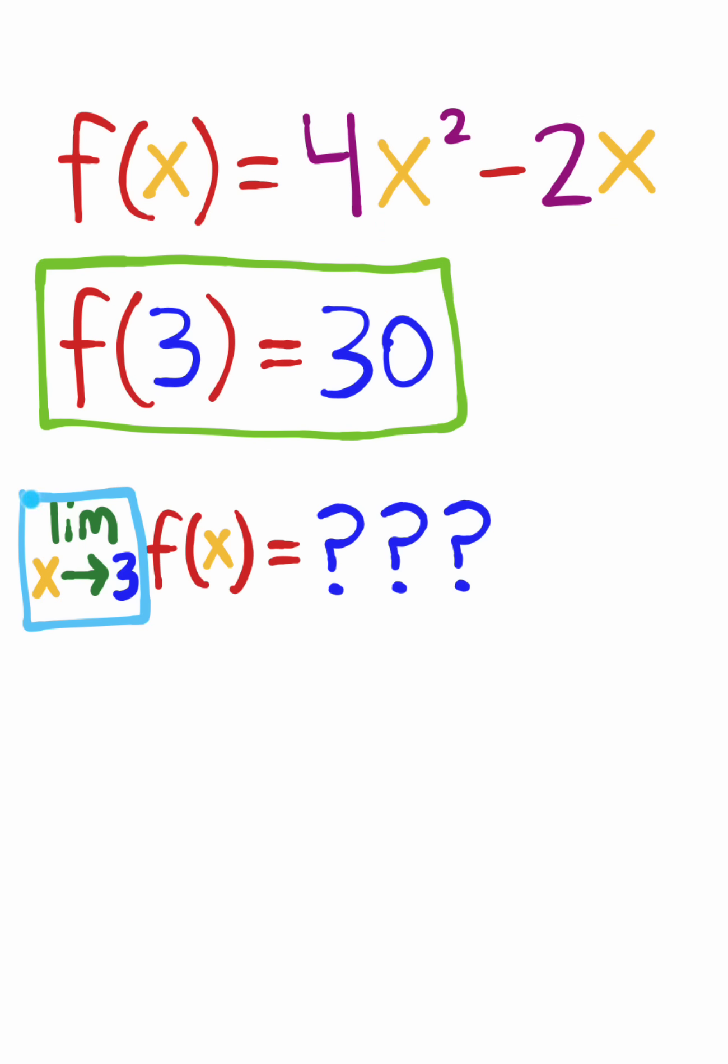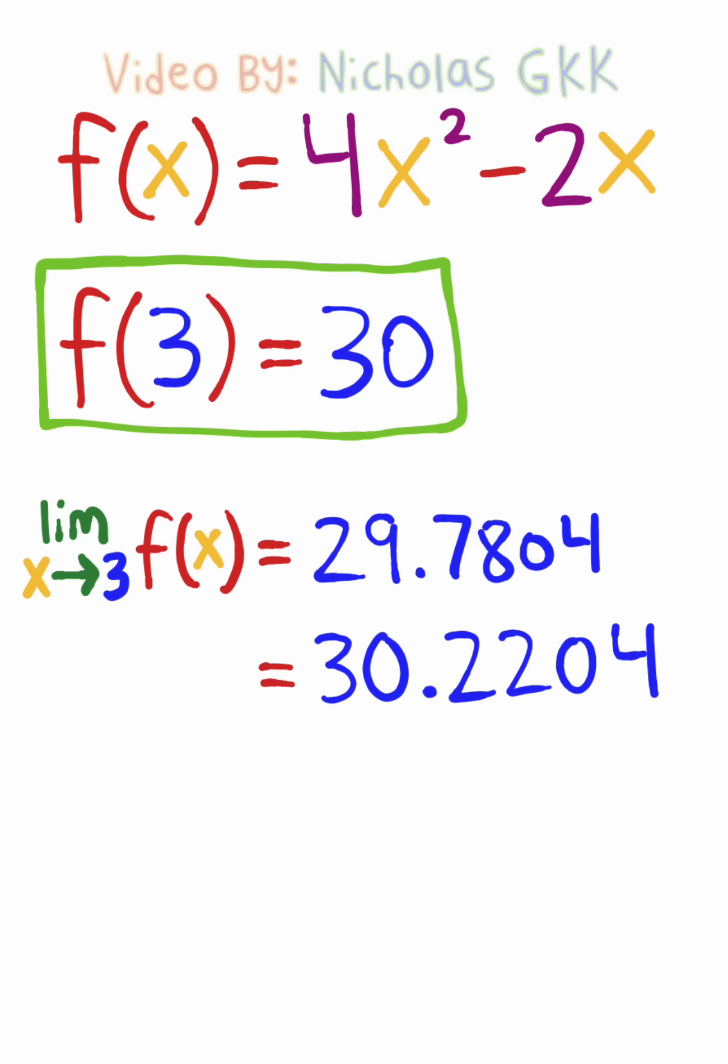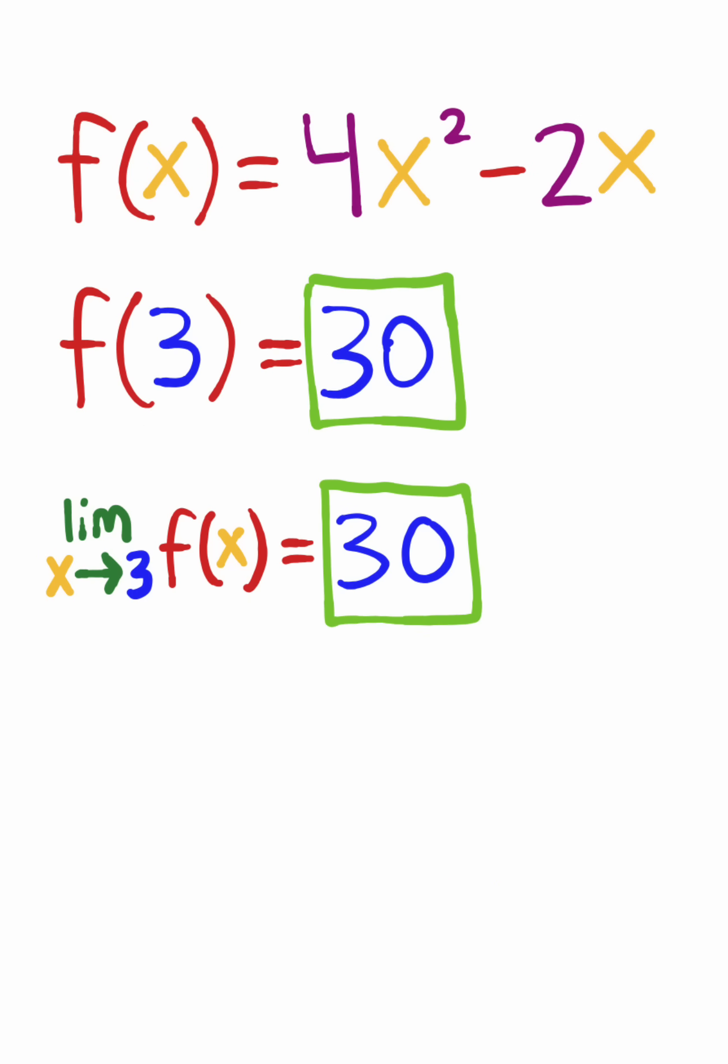But now let's try finding the limit. I'll choose a number that's slightly less than 3 and plug it in. I'll also choose a slightly greater number and plug it in. And I'm gonna keep doing this until I notice a general trend, but notice how this gave us the same result.